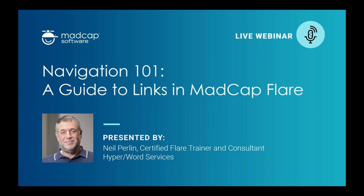Flare offers a wide variety of link types to help direct readers to get more information or related information — links such as hyperlinks, cross-references, drop-down links, toggler links, and more. Neil is going to review these different link types, the use cases for each, and best practices for customizing them. This is one of my favorite topics in Flare because using the right link can have such a positive impact on the usability of content. Welcome, Neil — so glad to have you with us today.